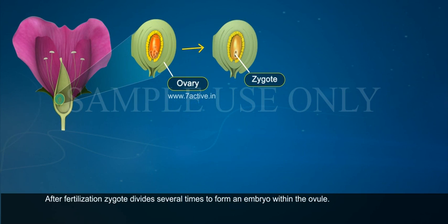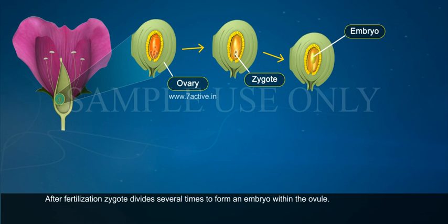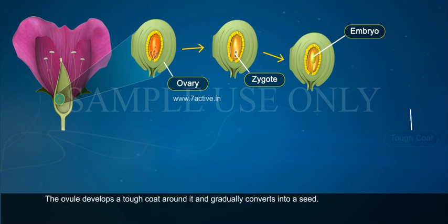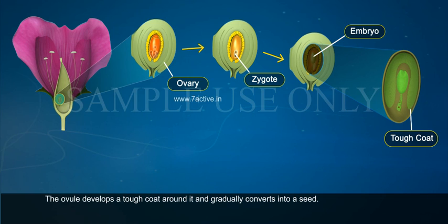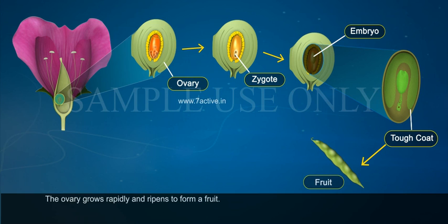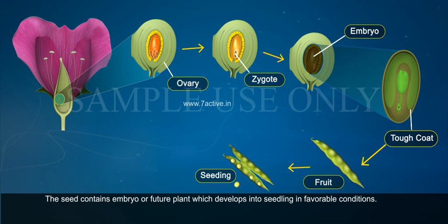After fertilization, the zygote divides several times to form an embryo within the ovule. The ovule develops a tough coat around it and gradually converts into a seed. The ovary grows rapidly and ripens to form a fruit.